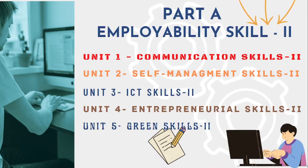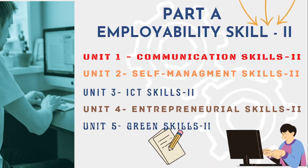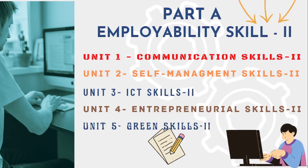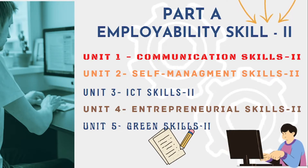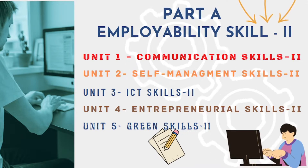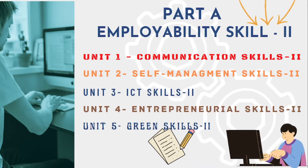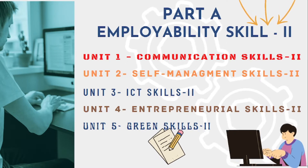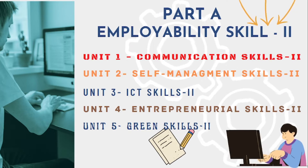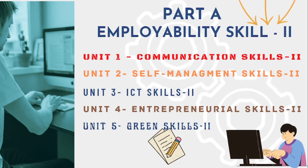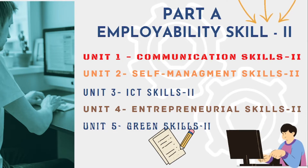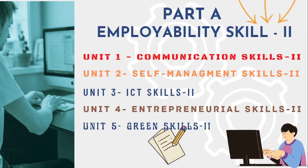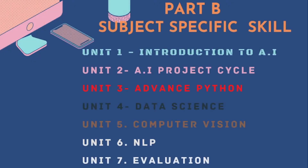In Part A, Employability Skills: Unit 1 is Communication Skill 2, covering various methods of communication, pros and cons of written communication, principles of communication, and basic writing skills. Unit 2 is Self-Management Skill 2, covering stress management techniques and the ability to work independently. Unit 3 is Information and Communication Technology Skill 2, covering different operating systems and basic care and maintenance of computers. Unit 4 is Entrepreneurial Skill, covering characteristics of an entrepreneur. Unit 5 is Green Skill 2, covering the importance, problems, and solutions related to sustainable development.